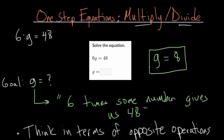And to get that, we first have to get rid of this multiplication by 6. So think in terms of opposite. What is the opposite operation of multiplication? How can we cancel that out? And the opposite of multiplying is dividing.